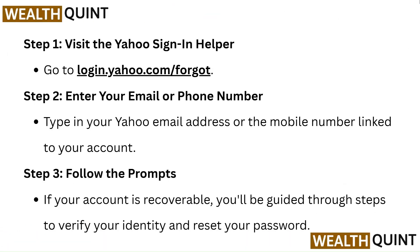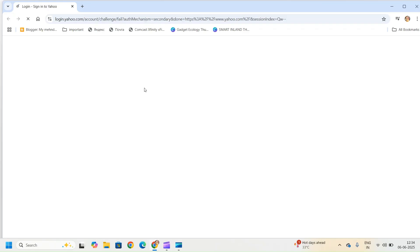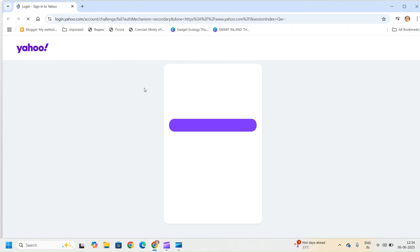Step 1: Visit the Yahoo sign-in helper. Go to login.yahoo.com. The link for this will be provided in the description. When you click on the link, a webpage will appear on your screen like this. From here, you can start over or visit the help site.